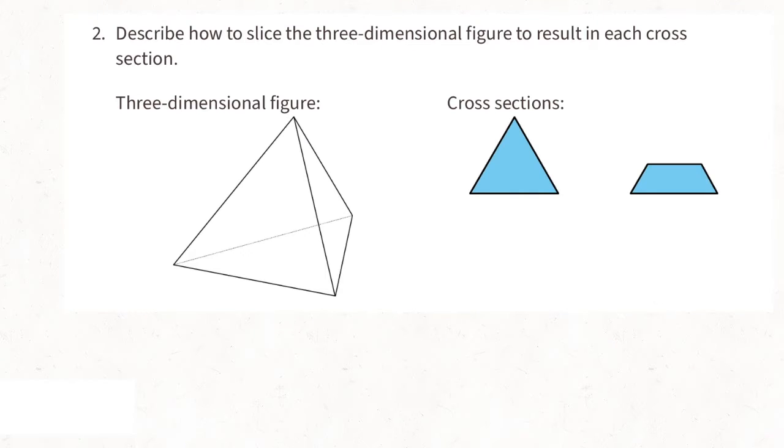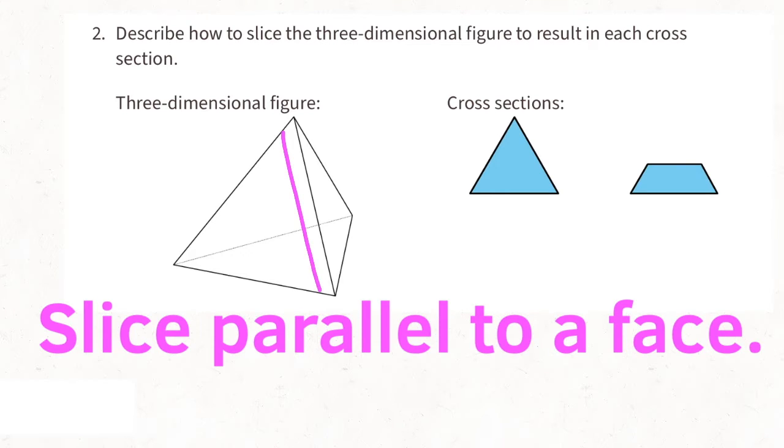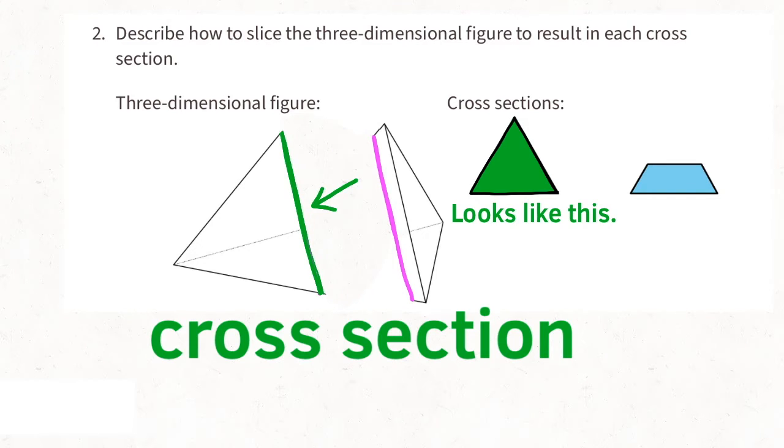Problem number 2. Describe how to slice the three-dimensional figure to result in each cross section. Slice parallel to a face, and if you looked at it straight on, the cross section would look like this.